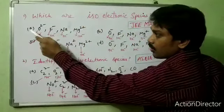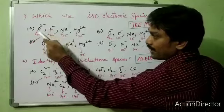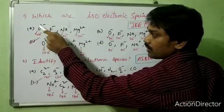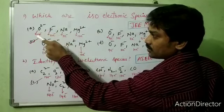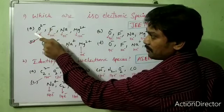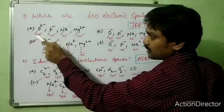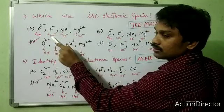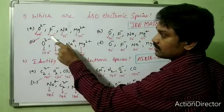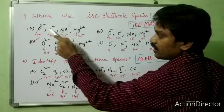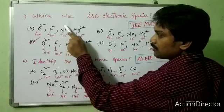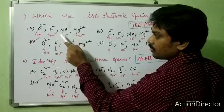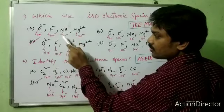Option A: O²⁻ — oxygen has 8 protons, gaining 2 electrons, so 8 plus 2 equals 10 electrons. F⁻ — fluorine has 9 protons, gaining 1 electron, so 9 plus 1 equals 10 electrons. Sodium is a neutral atom, so the number of protons equals the number of electrons: 11 electrons.